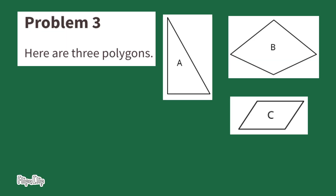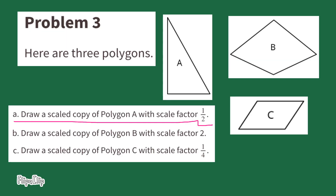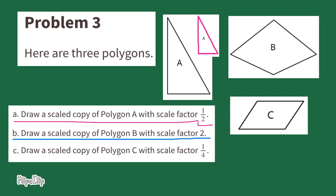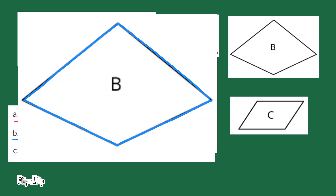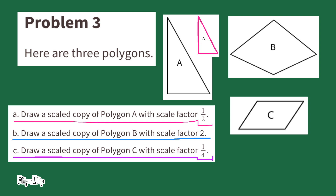Number 3. Here are three polygons. Part A: Draw a scaled copy of Polygon A with a scale factor of one half — our copy needs half the height and half the width. Part B: Draw a scaled copy of Polygon B with a scale factor of 2 — our copy has to have double the height and double the width. Part C: Draw a scaled copy of Polygon C with a scale factor of one fourth — the copy's height and width need to be one fourth of the original.